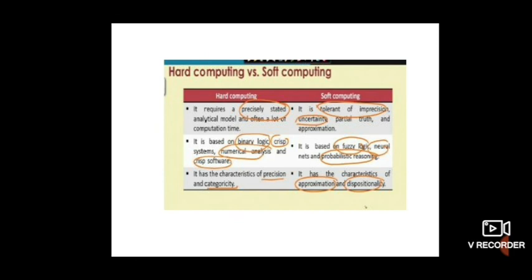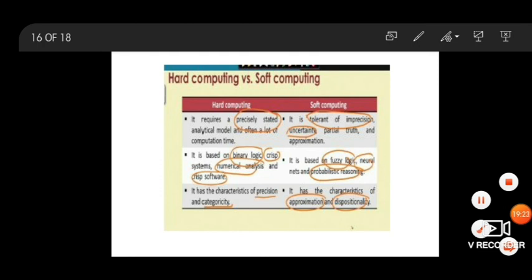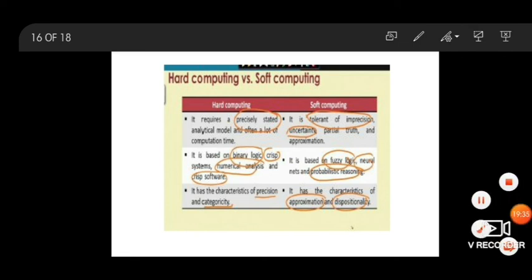Now let's differentiate hard computing versus soft computing. In hard computing, you have a precise solution and fixed methodologies to solve a problem. In soft computing, solutions can be uncertain, and algorithms are adaptive — they change over time as the system learns. Also, in some cases, soft computing solutions can be more cost-saving compared to hard computing approaches. That concludes this introduction to soft computing.